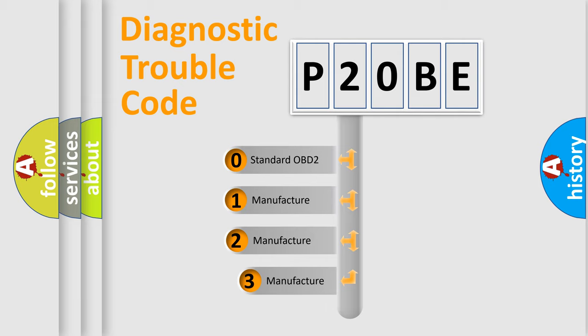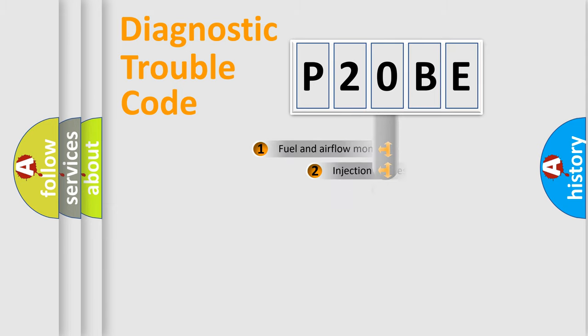If the second character is expressed as zero, it is a standardized error. In the case of numbers 1, 2, or 3, it is a manufacturer-specific expression of the car-specific error.